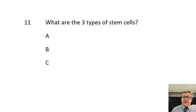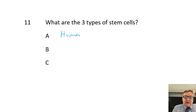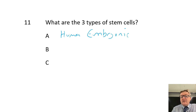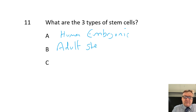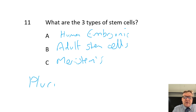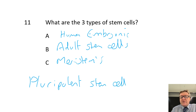Number eleven: what are the three types of stem cells? We've got human embryonic stem cells, which are in an embryo; adult stem cells; and meristem cells, which are in a plant. There is also something called a pluripotent stem cell, where we've tried to make human embryonic stem cells from adult stem cells.